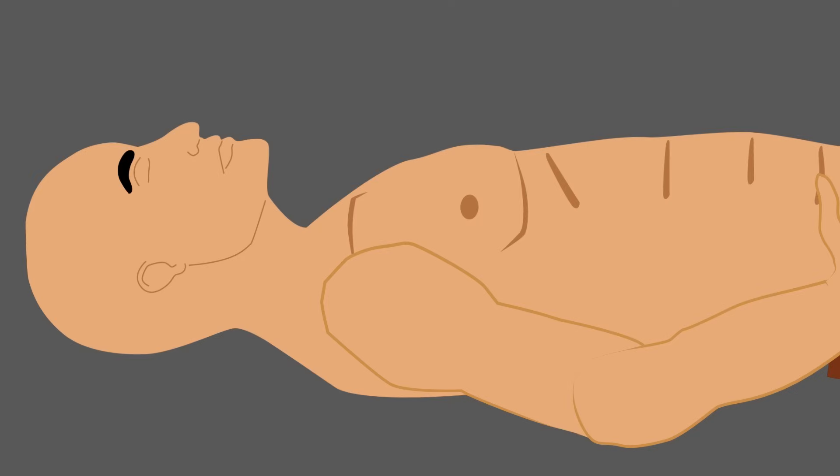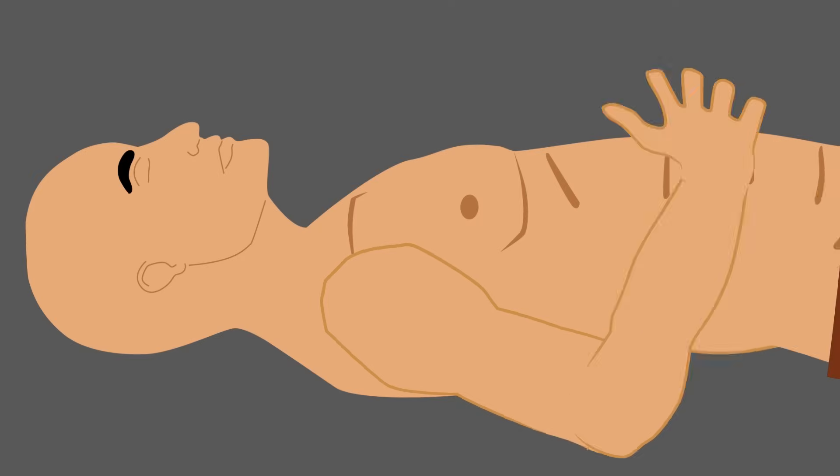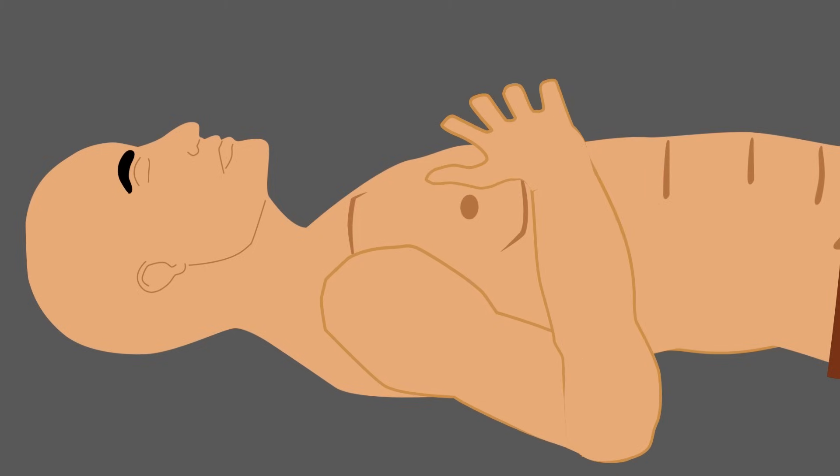Pay attention to your breathing. Place one hand on the part of your chest or abdomen that seems to rise and fall the most with each breath. If this spot is in your chest, you are not utilizing the lower part of your lungs.